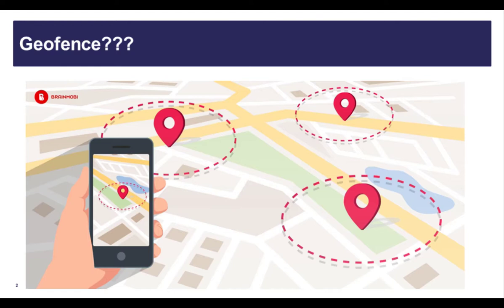A geofence is a tool to help you guide your employees to make the right choice to punch in at their work location and not from the comfort of their homes. Understand that human beings are very adaptable intelligent creatures and the geofence is not infallible, so trust but verify. Setting up a geofence is required if your employees are going to punch in using their phones. If your team is not going to use their phones to punch, then you don't need a geofence.